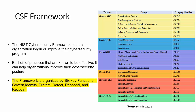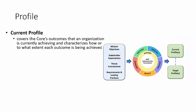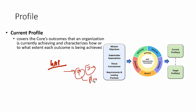In NIST CSF 2.0 we have six core functions. When implementing the cybersecurity framework, we use something called a profile — a list of functions present in the organization. There are two types of profiles: the current profile, which is what we currently have, and the target profile, which is our desired outcome. When implementing anything in an organization, we always start with a gap assessment — identifying current practices such as incident management or password controls.